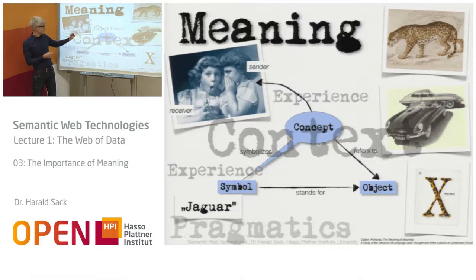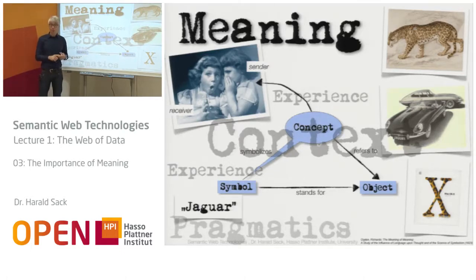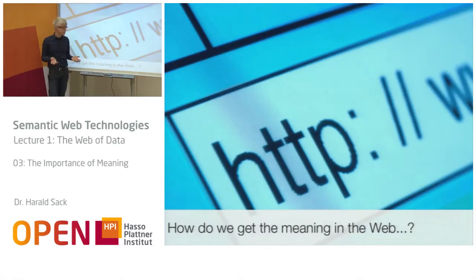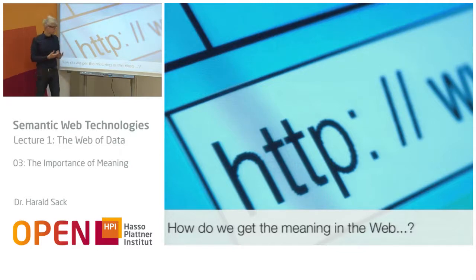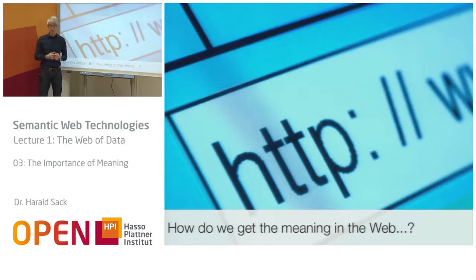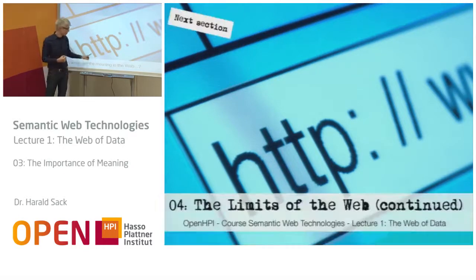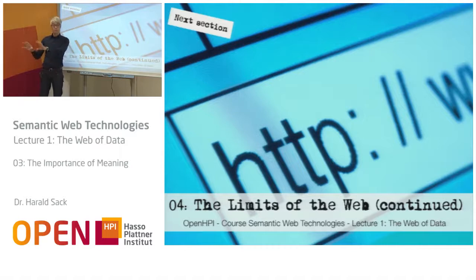We will come back to this semiotic triangle again later in this lecture. In general, this is how language and communication works. The problem, of course, is: what about the web? How does communication work in the web? And not only related to us humans, but how can machines be able to participate in this kind of communication and understand the information inside the web — to make the web, with its huge amounts of information, usable for us humans. This will be the topic of the next part of the lecture, when we try to explore the limits of the web.